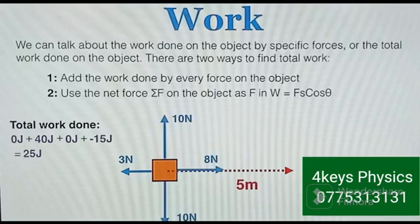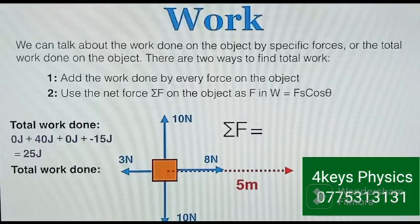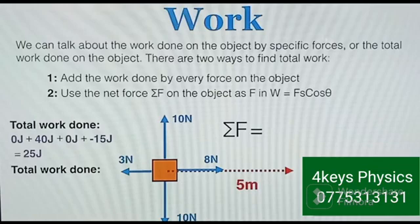The total work done is 40 + 0 + 0 + (−15) = 25 J. Another way to find this is to subtract the opposing forces: 8 − 3 = 5 N net force, then 5 × 5 meters gives 25 joules — the same result confirming both methods.